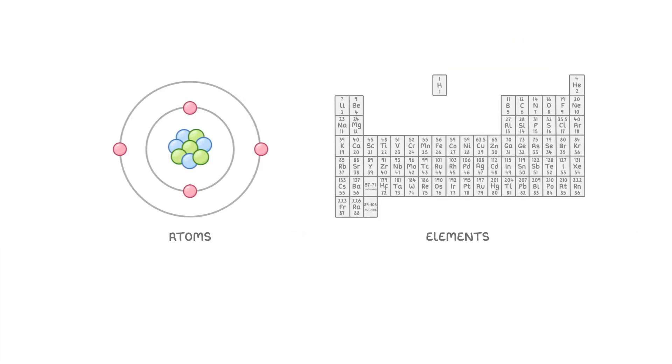Now that we know what atoms and elements are, we need to take a look at how atoms actually exist in the real world. And to do this, there are three important terms to understand: molecules, mixtures, and compounds.